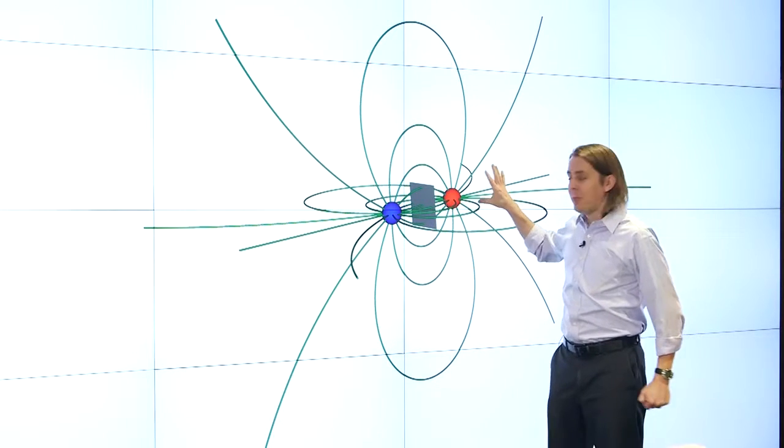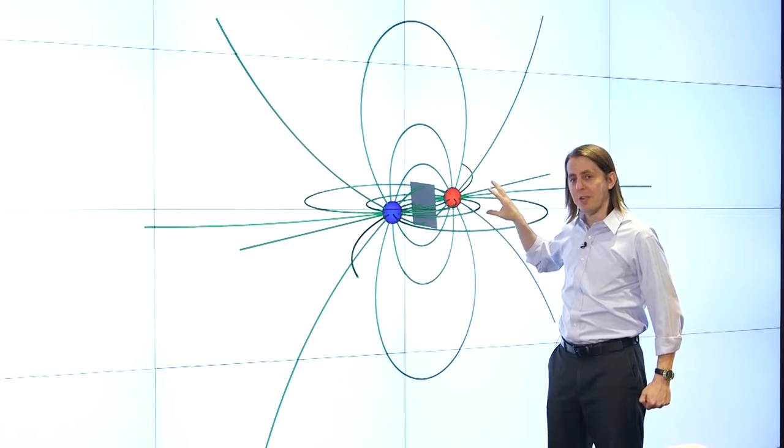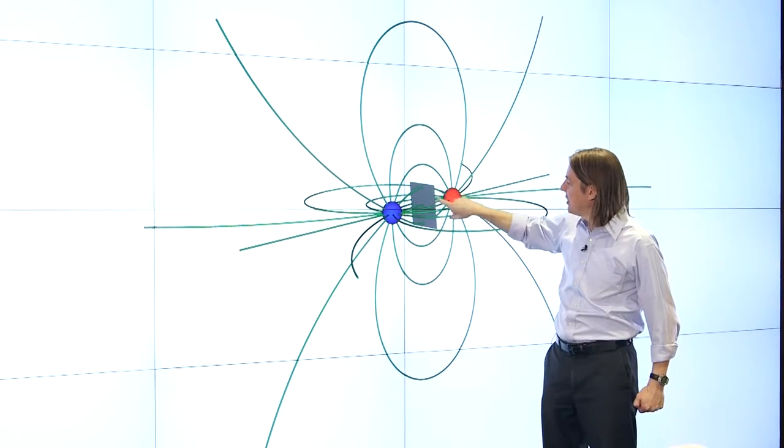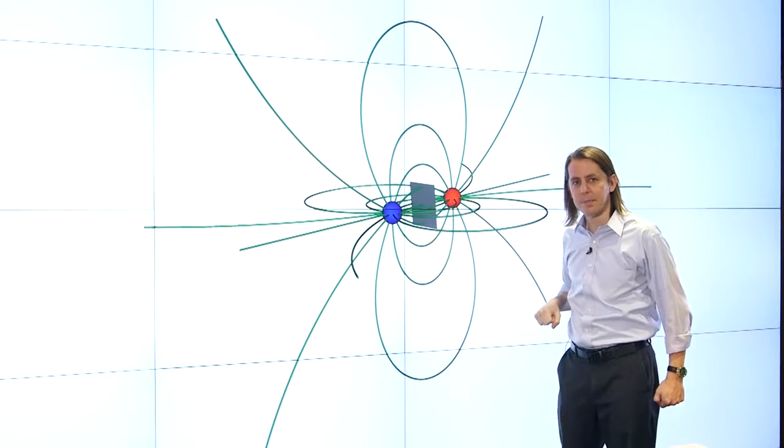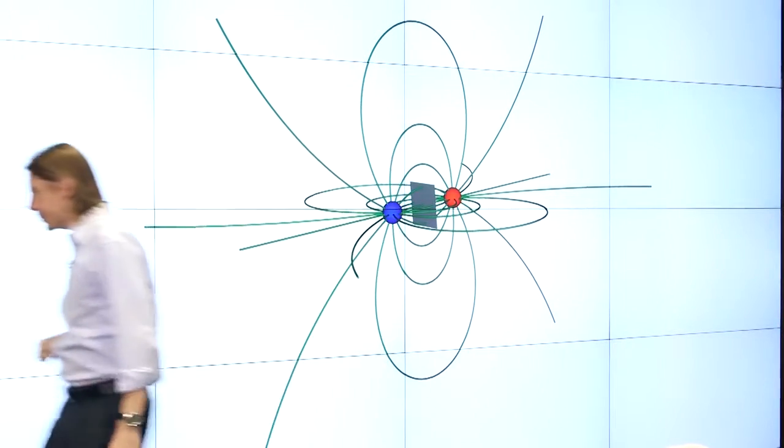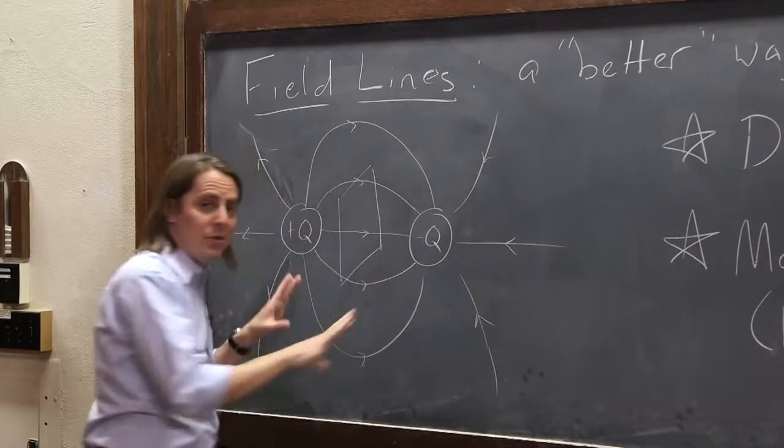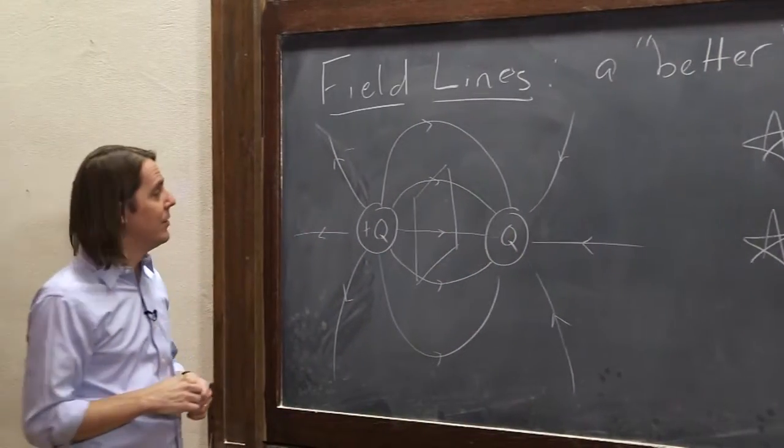And the way we're going to keep up with the field is we're going to count the number of lines per unit area, and here's that square that's showing you the area. And what you would literally do is just count how many lines are going through the square. So there you see another very important case where even though we draw things in 2D, we have to think about them in 3D.